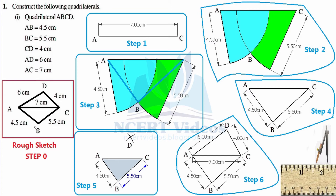We continuously write each vertex and its measurement, as this will help in drawing the actual figure. We connect B and C with BC = 5.5 cm, then CD = 4 cm, and finally AD = 6 cm. We have now represented all four side measurements and the diagonal measurement on our rough sketch. Step 0 — the rough sketch — is now complete.